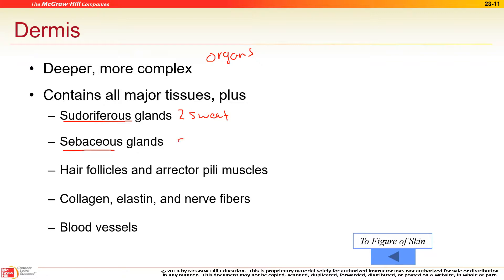The sebaceous glands are oil glands; they produce sebum, which conditions your hair and your skin. The hair follicle produces the hair shaft. Hair is just modified skin — it divides at the root and gets pushed out, just like skin cells.